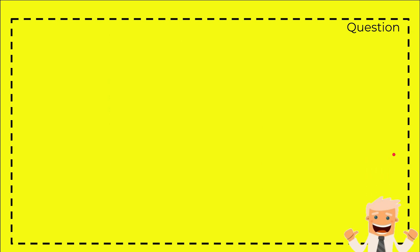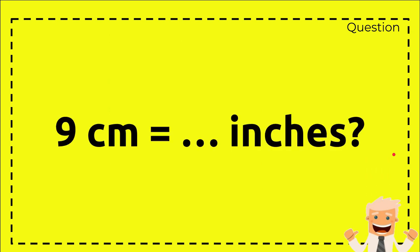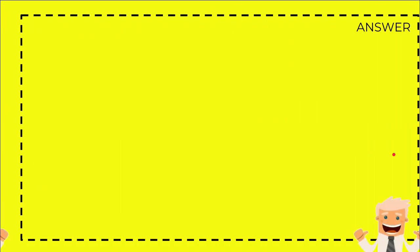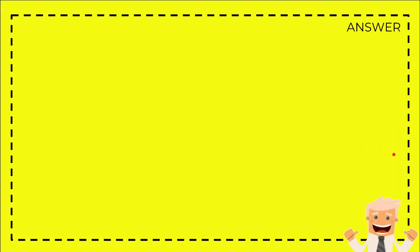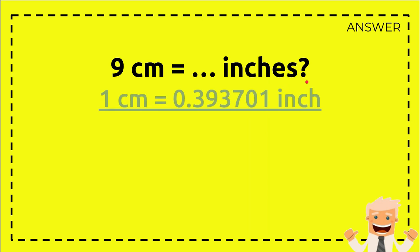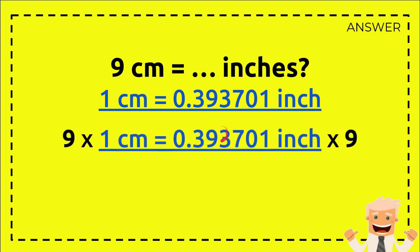Here's the question: 9 centimeters equals how many inches? This is the answer section. First, we need to write the question again: 9 centimeters equals how many inches. Then we write the formula: 1 centimeter equals 0.393701 inch.